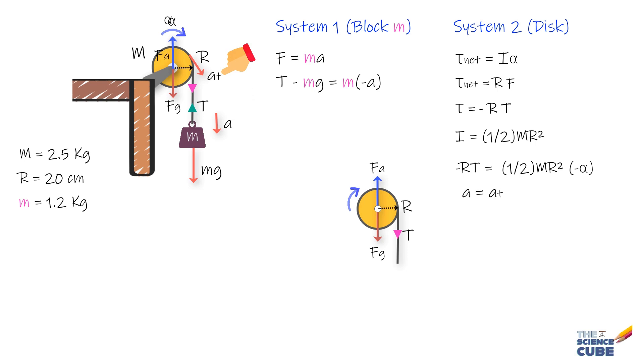And so in the equation AT equals alpha r, we can substitute A for A tangential and get alpha equals A upon r. And putting this value of alpha here, what we get is T equals half ma.